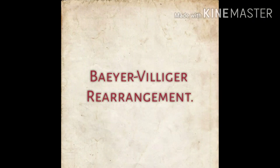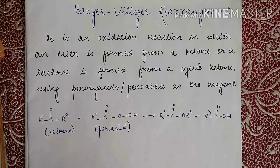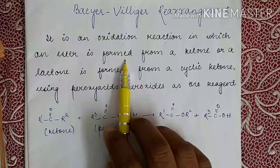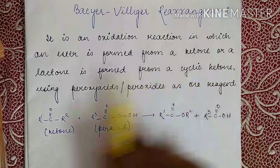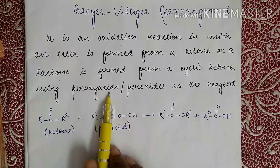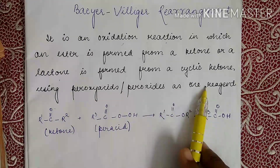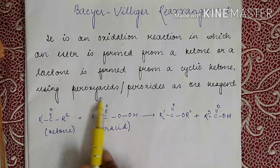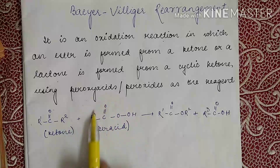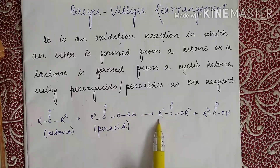Hello everybody, welcome back to my channel Chemical Crystal Palace. Today's topic of discussion will be Baeyer-Villiger rearrangement. It is an oxidation reaction in which an ester is formed from a ketone, or a lactone is formed from a cyclic ketone, using peroxy acids or peroxides as the reagent. Peroxy acids are also called per acids. So we take a ketone, we take a per acid, and resulting we form an ester.